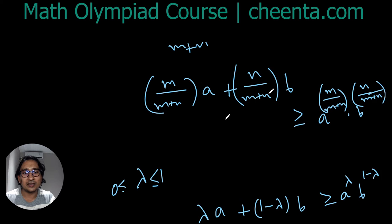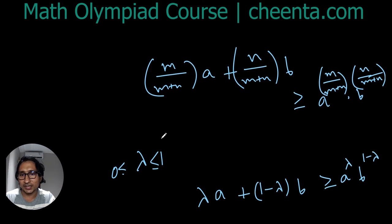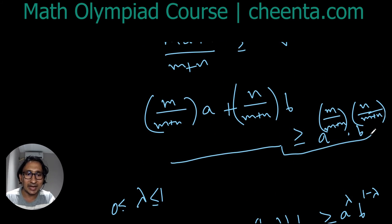Now here in this proof we need lambda to be rational, but this can be generalized for any lambda not necessarily rational.